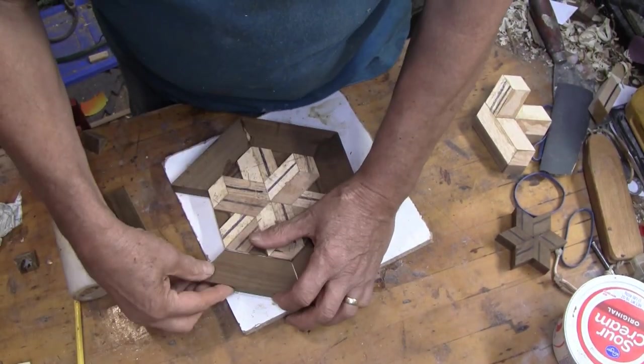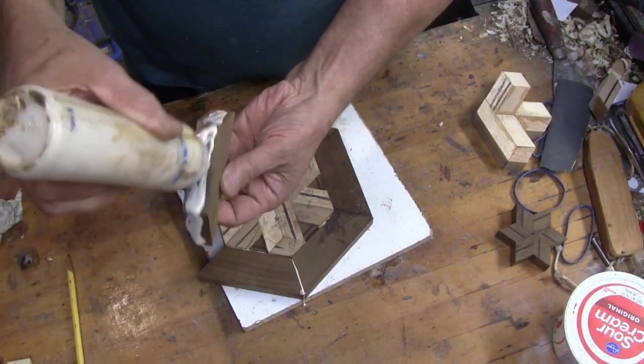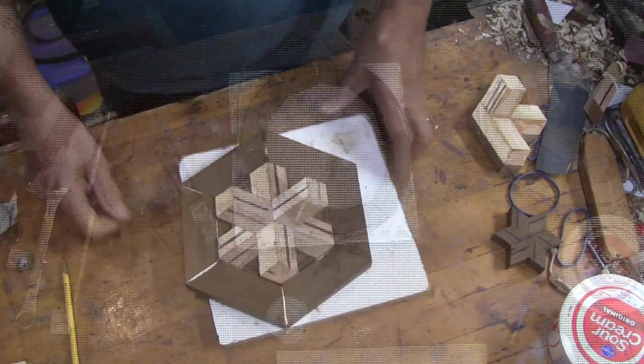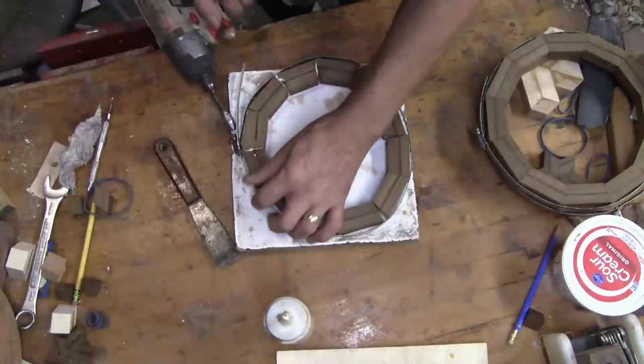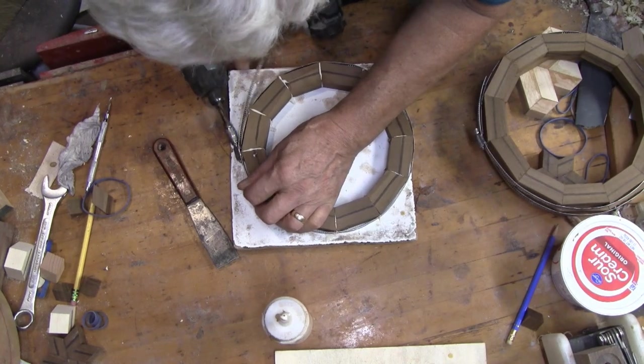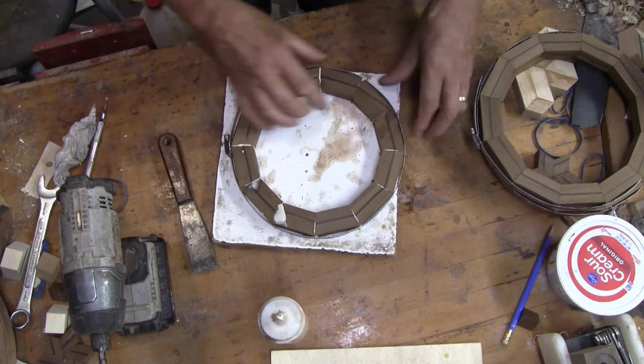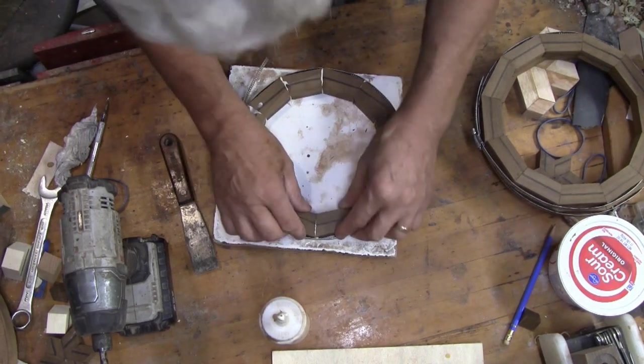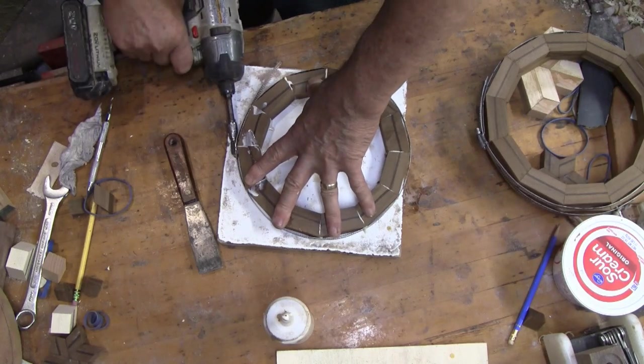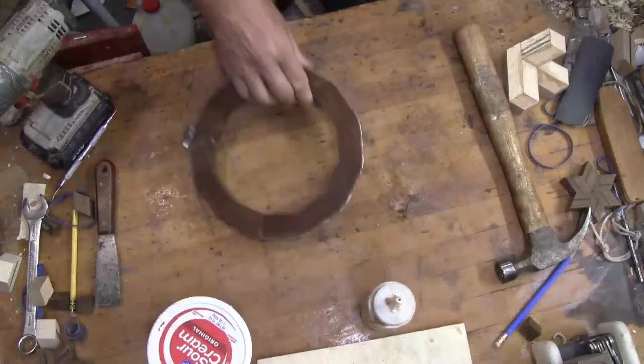I'm gluing on the pieces that go around the outside. It's your standard segments, six per ring. I'm making three segmented rings here. And there's 12 segments per ring. These are pretty standard. I didn't think I needed to spend the time showing that. I'd rather devote the time to the critical part of this turning.